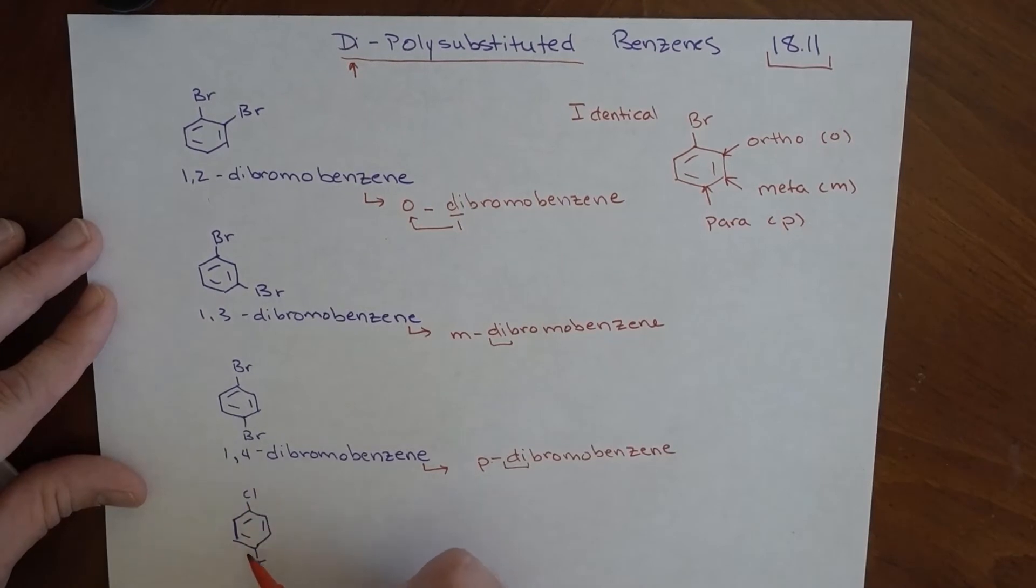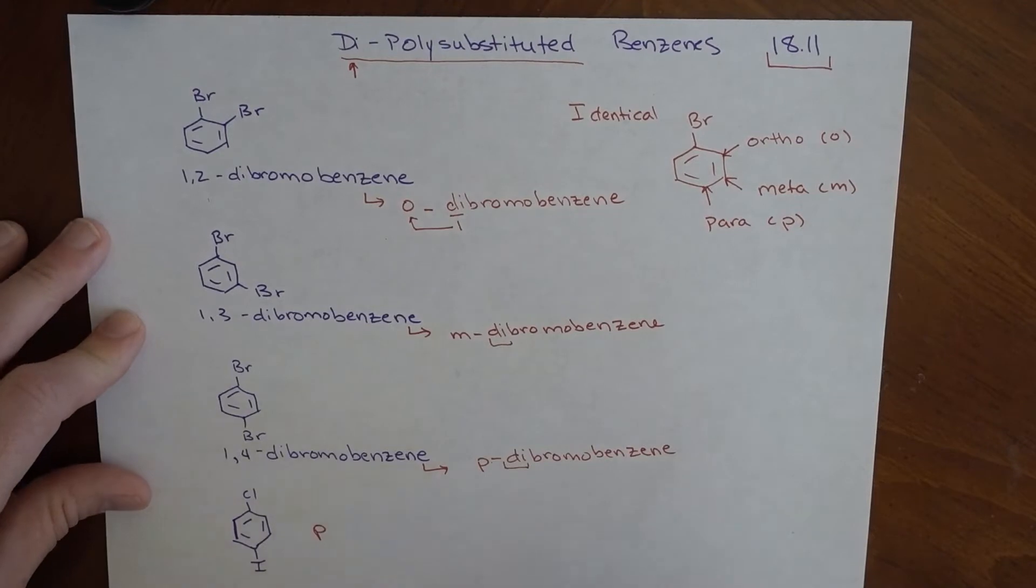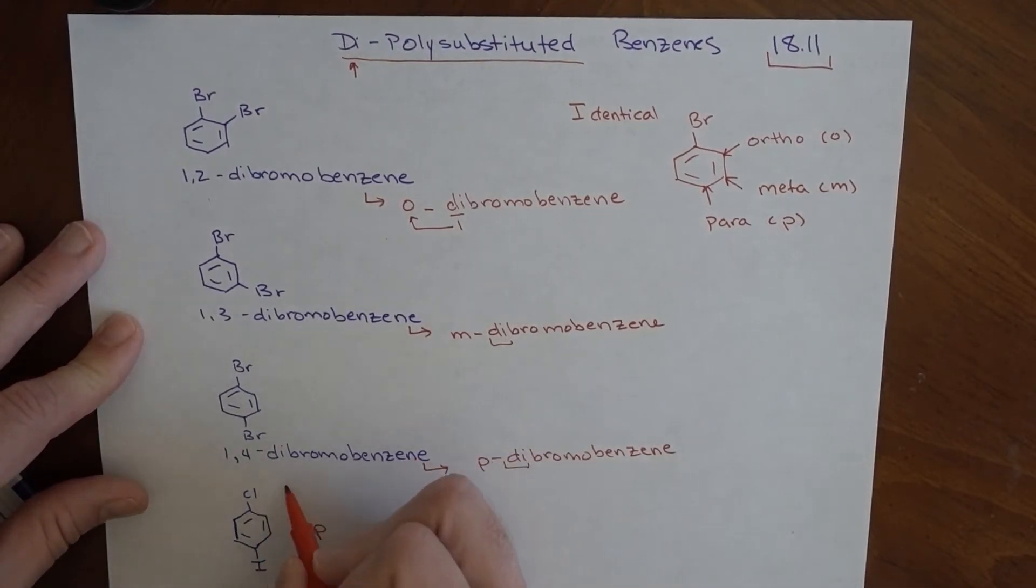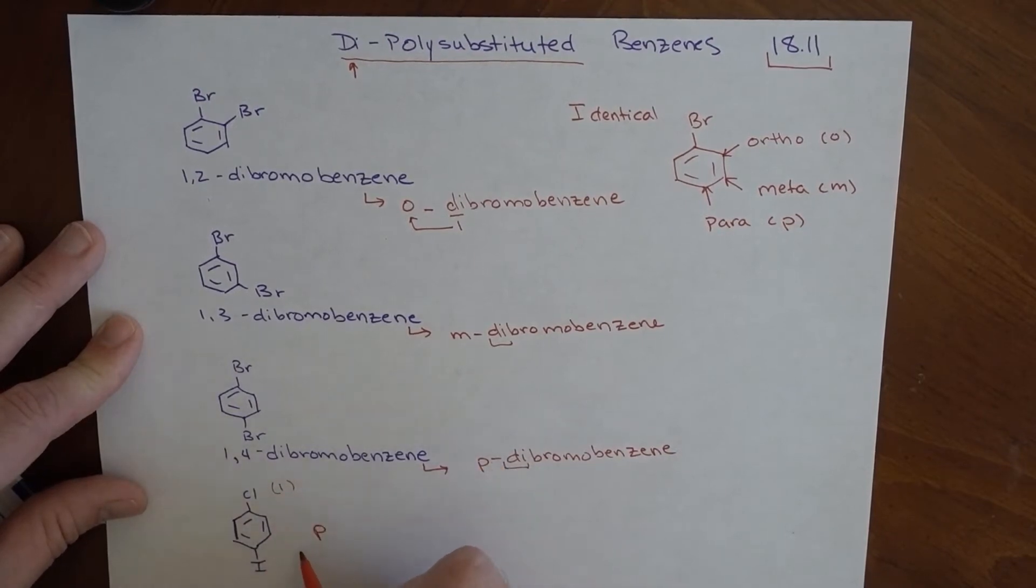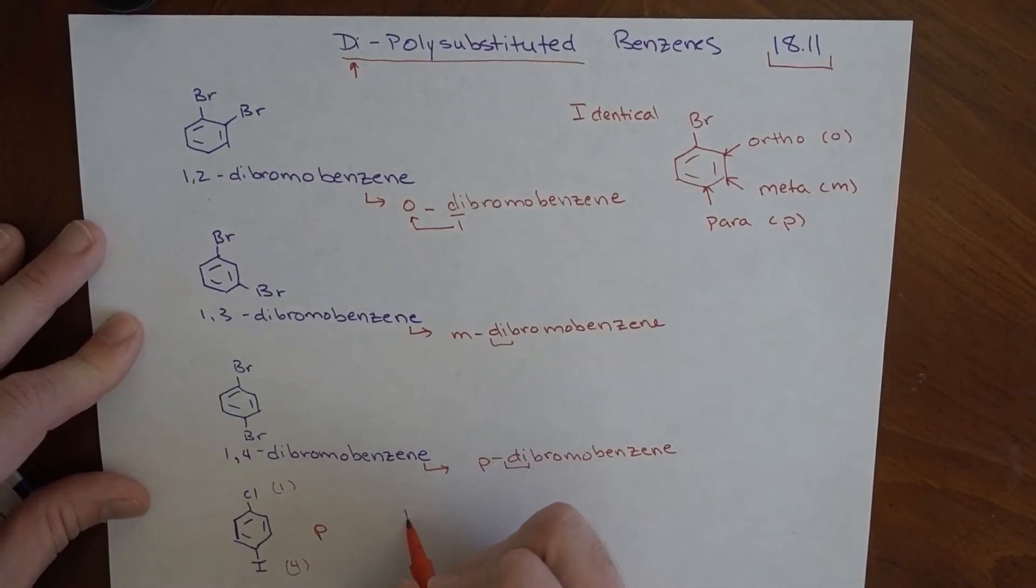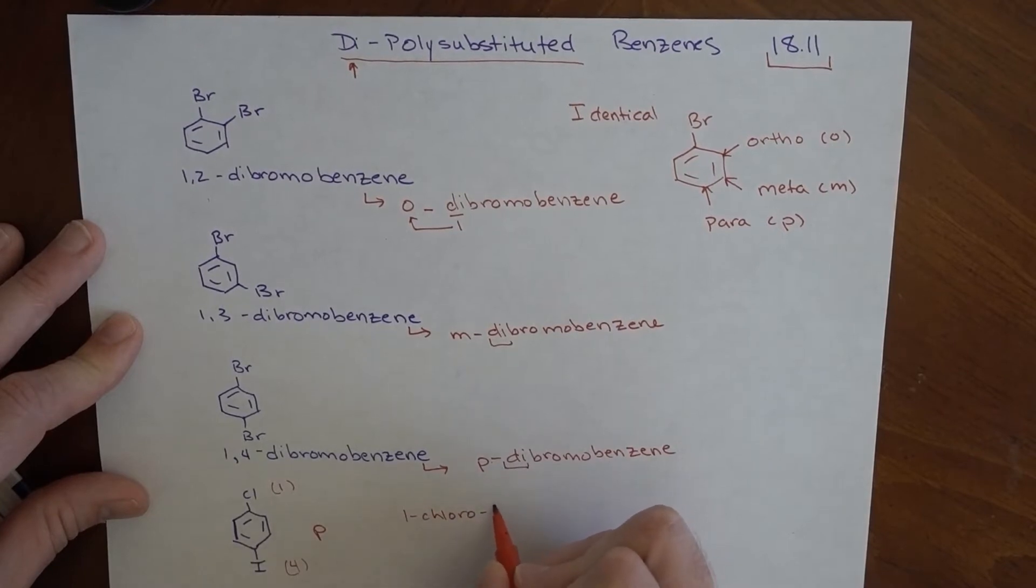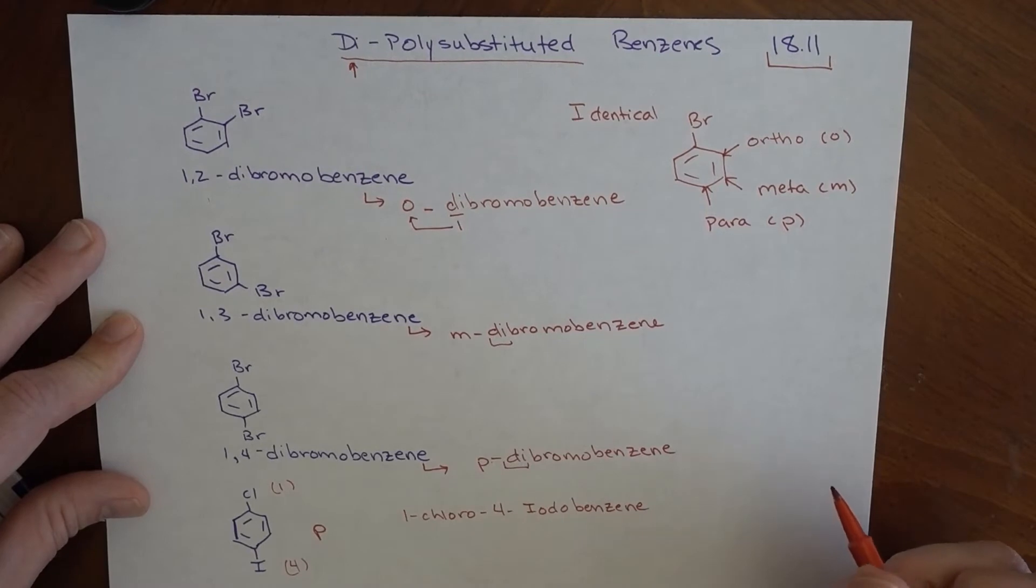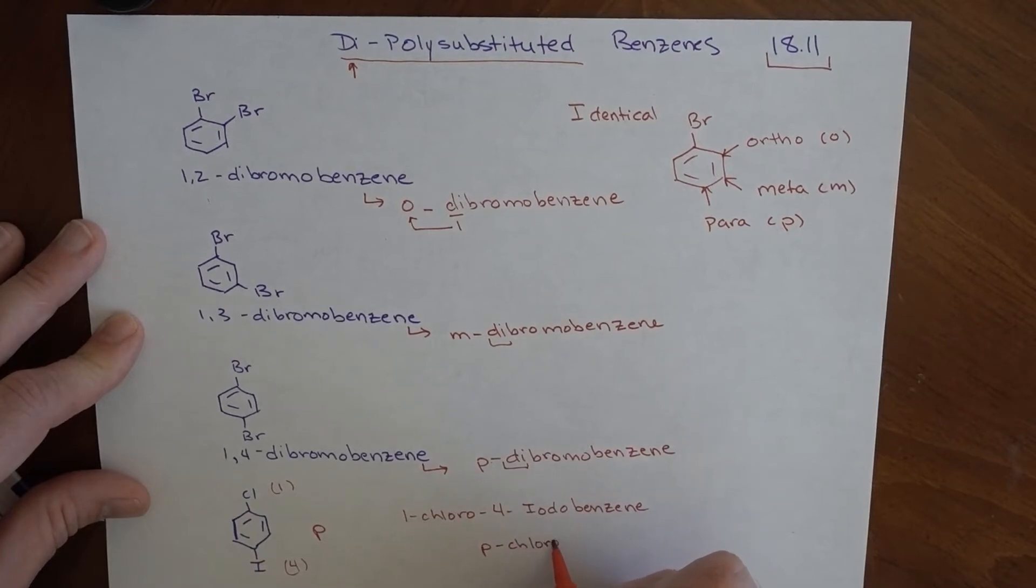Now, here, these are non-identical, and we can see that one thing is in a 4 position, one thing is in a 1 position, and they are para to each other. We name them alphabetically. This chloro would be one, and then this iodo would be fourth. The IUPAC name for this would be 1-chloro-4-iodo-benzene. My daughter's trying to hear. The way that we would end up naming this would be para-chloro-iodo-benzene. These are para to one another.